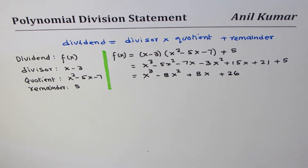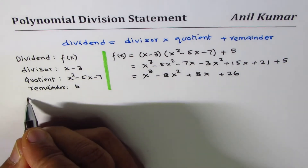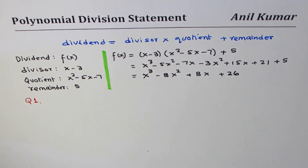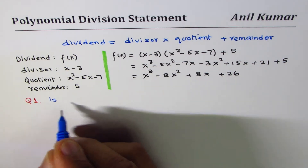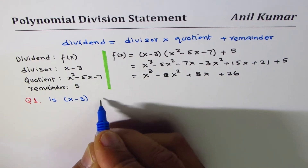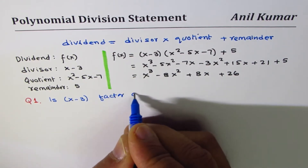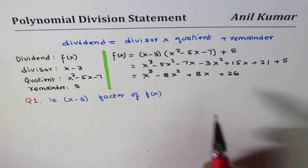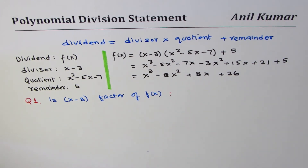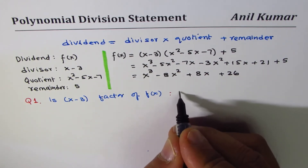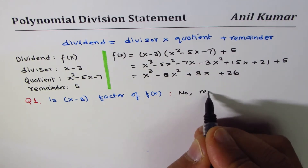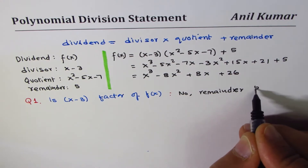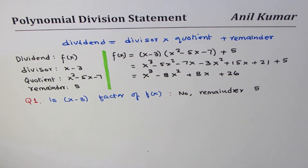The first question is: is x minus 3 a factor of f(x)? The answer is no, since we have a remainder of 5. Because the remainder is not zero, x minus 3 is not a factor.